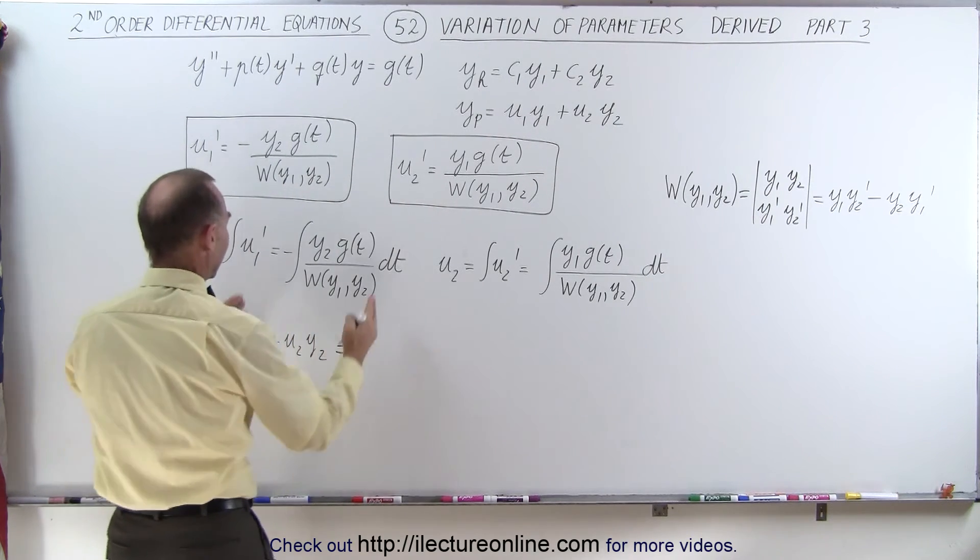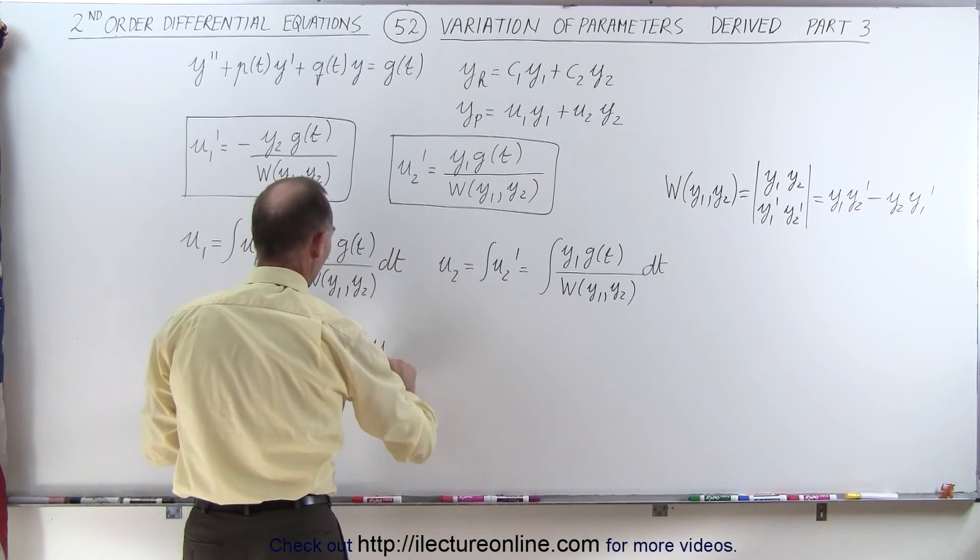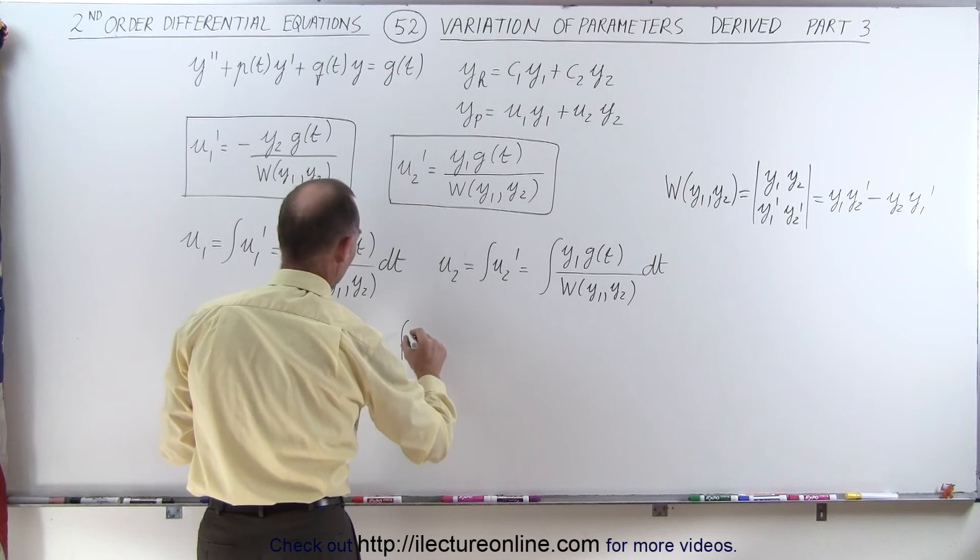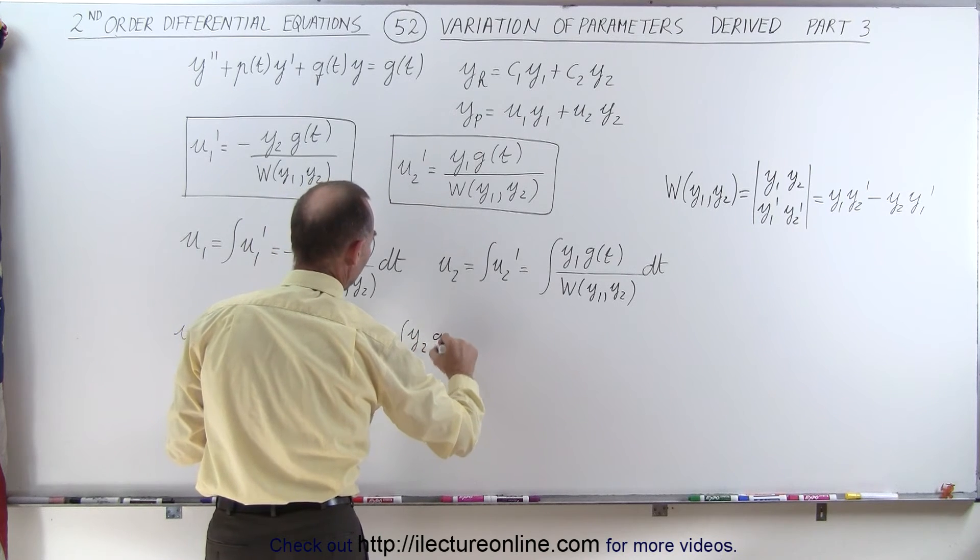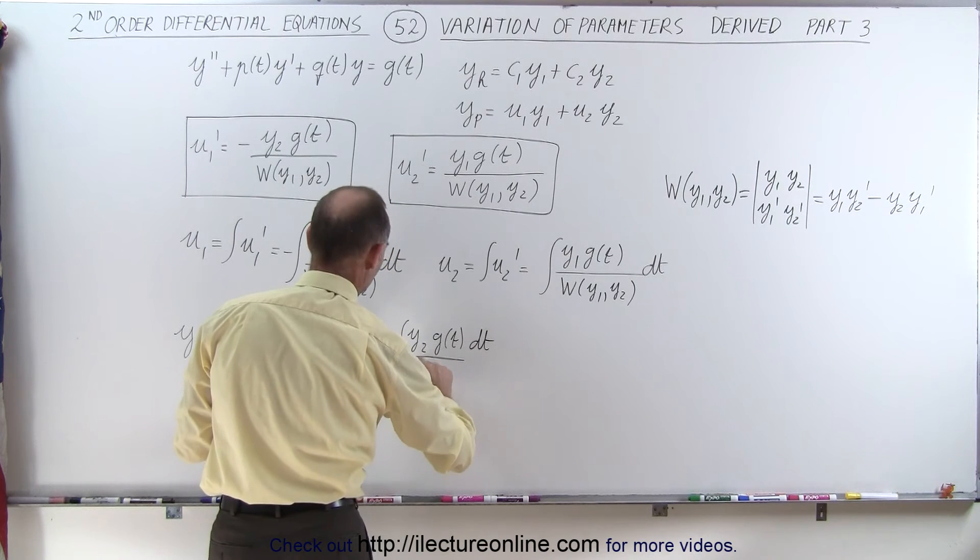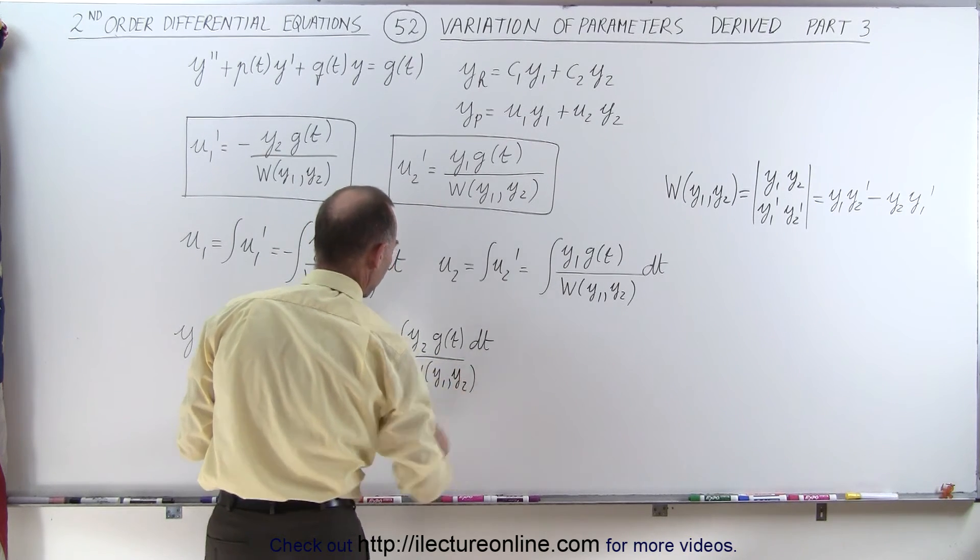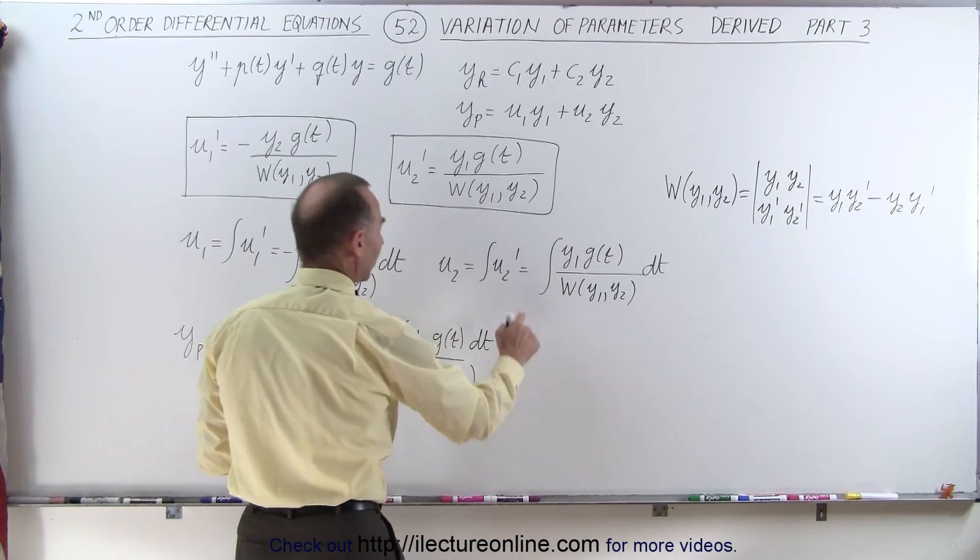So we multiply this times y1. We get minus y1 times the integral of y2 times g(t) dt divided by the Wronskian of y1 and y2.